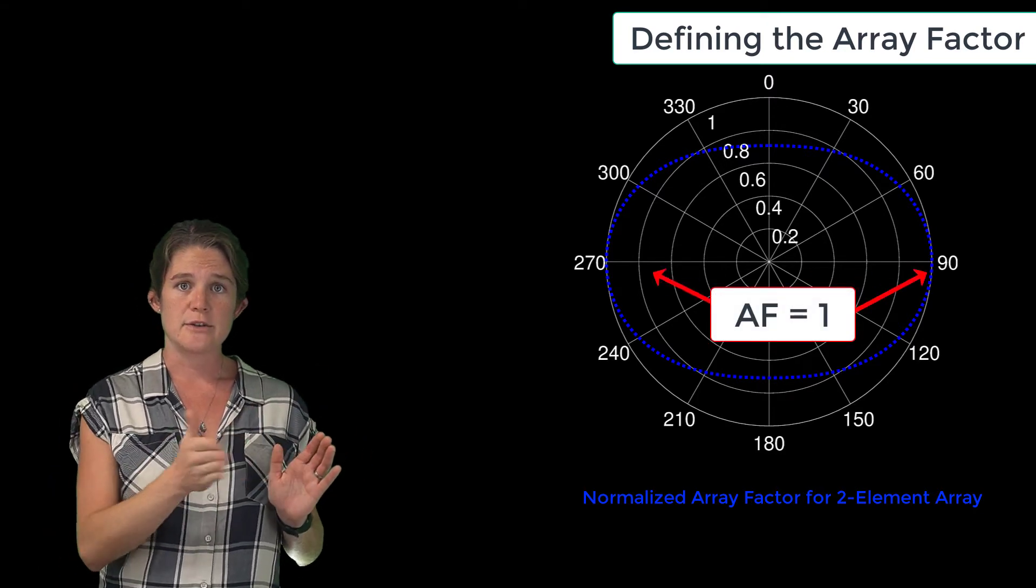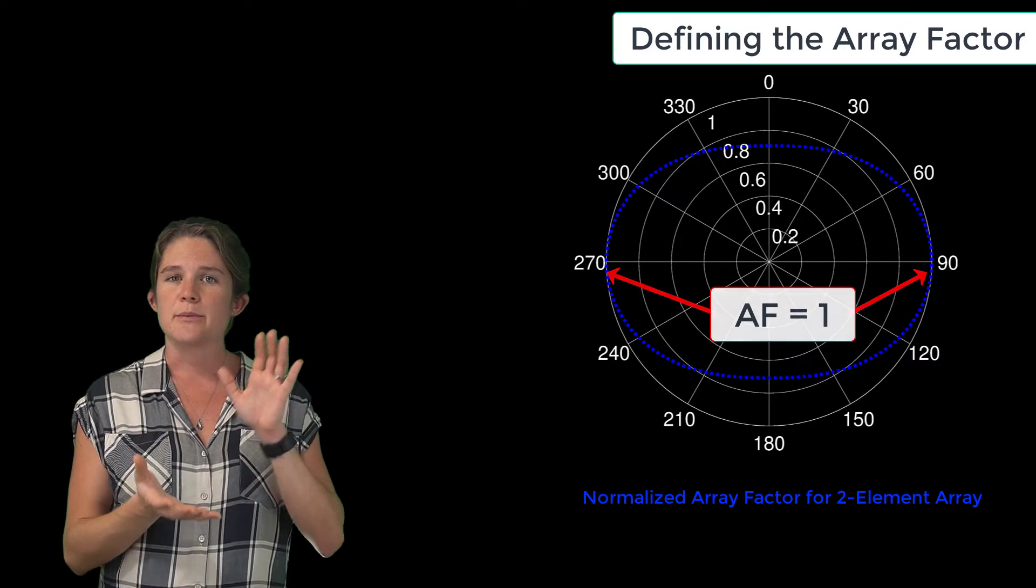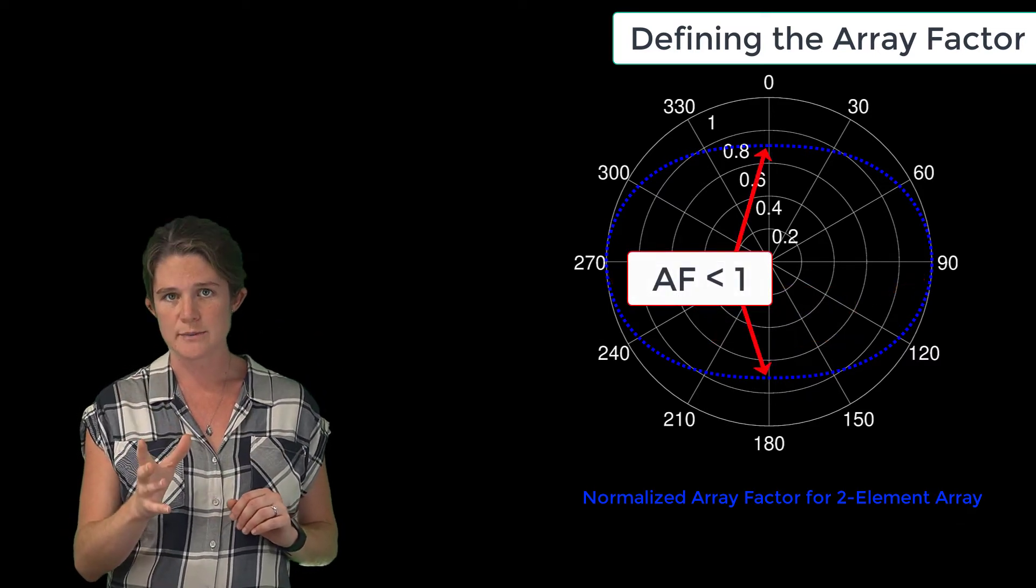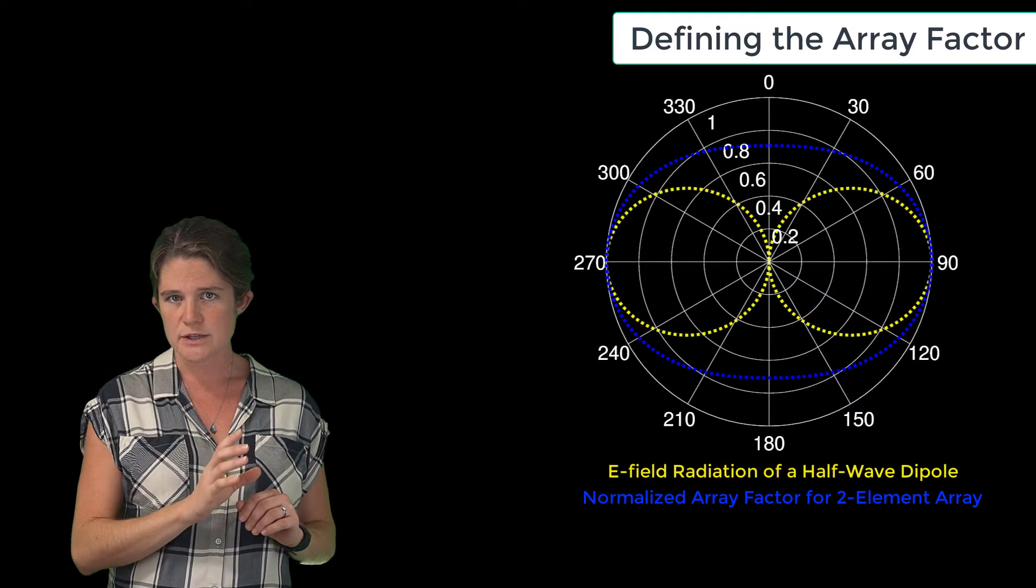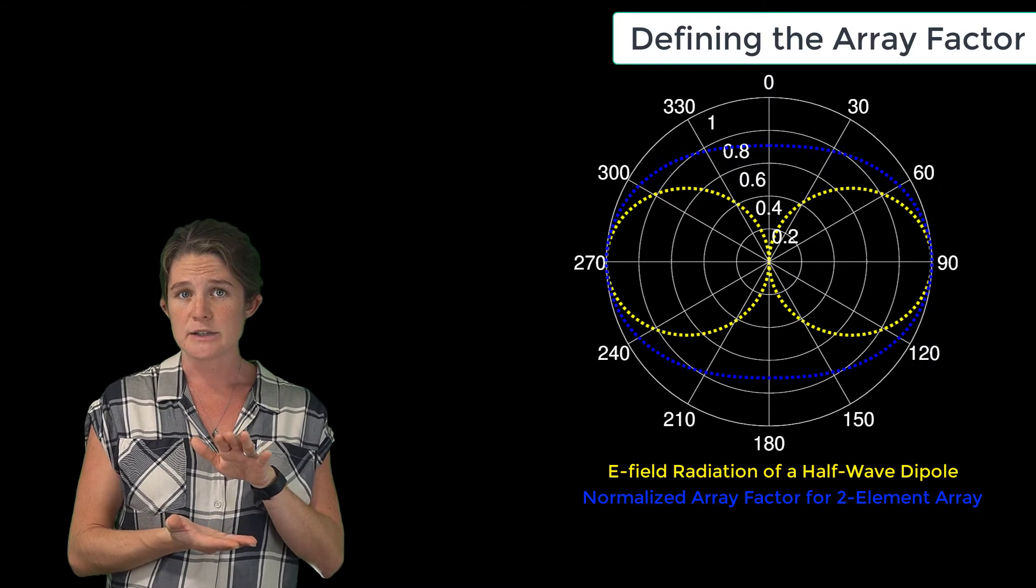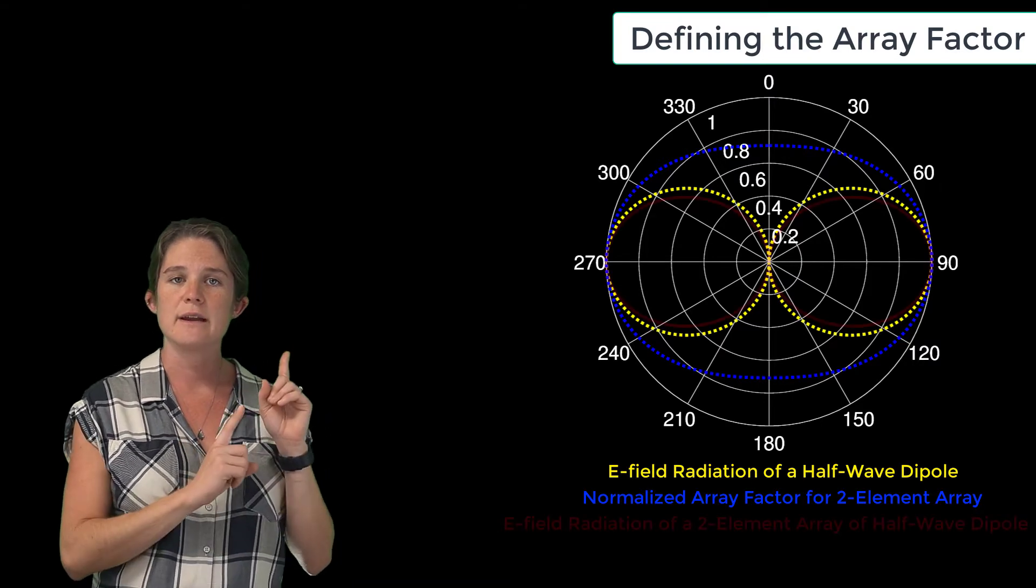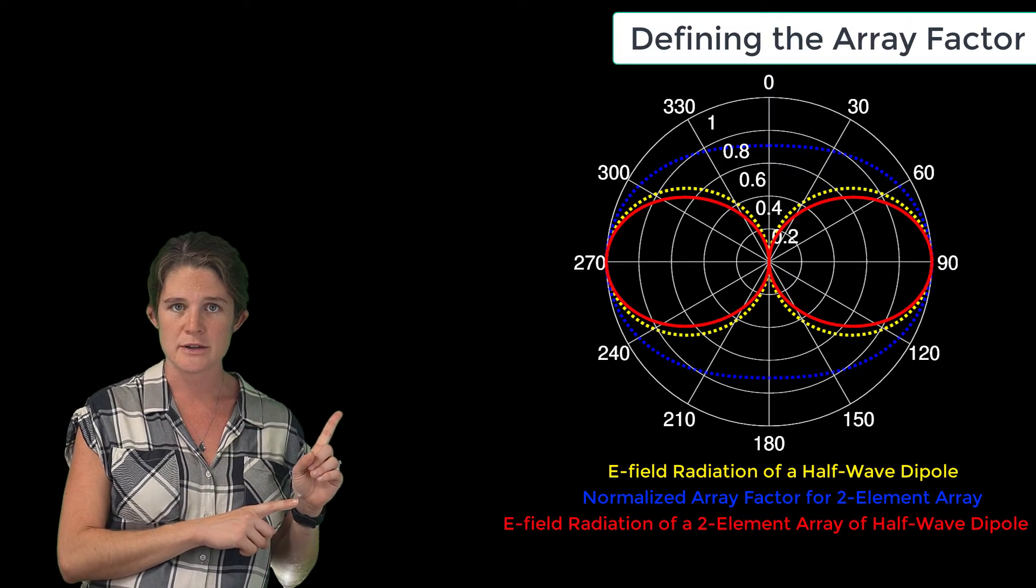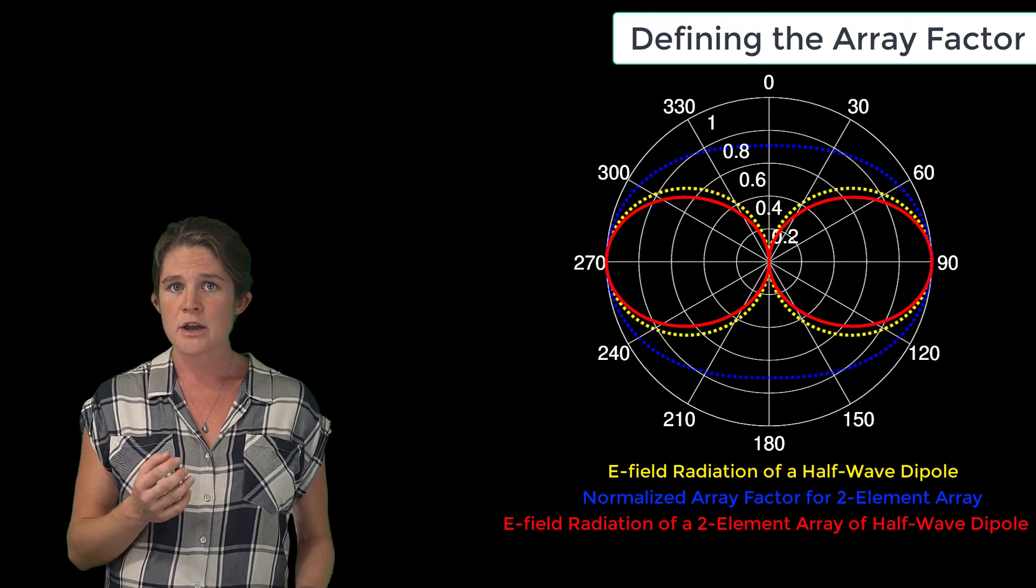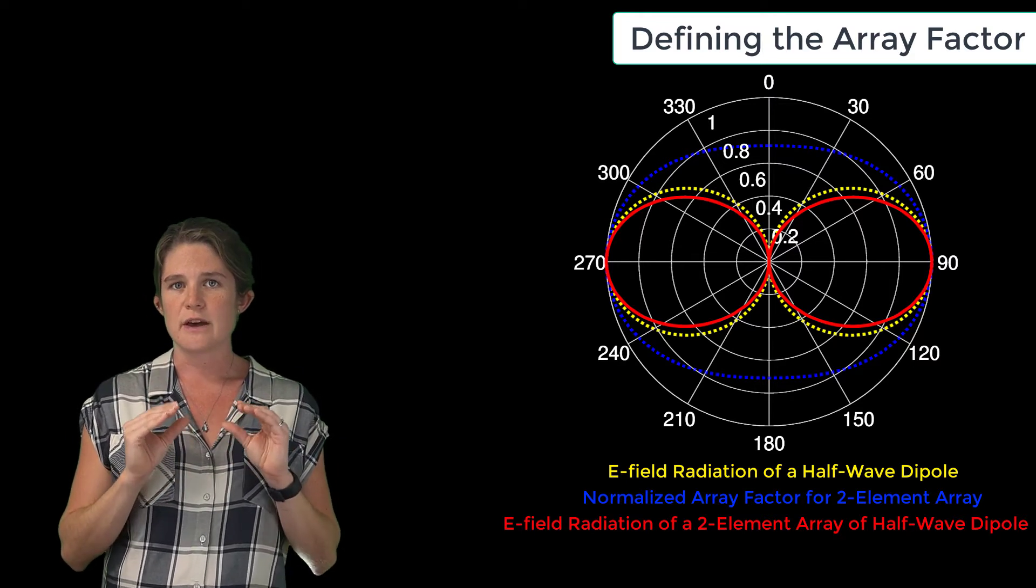Since the array pattern is 1 at theta equals 90 degrees in the broadside direction to the array, but is compressed in the z direction, we expect that the total radiation pattern, which is the product of these two fields, will be vertically squished but otherwise maintain its normal dipole shape. And here is the result of that multiplication. You can see that the general shape of the radiation remains, but the lobes are narrowed because of that vertical compression.